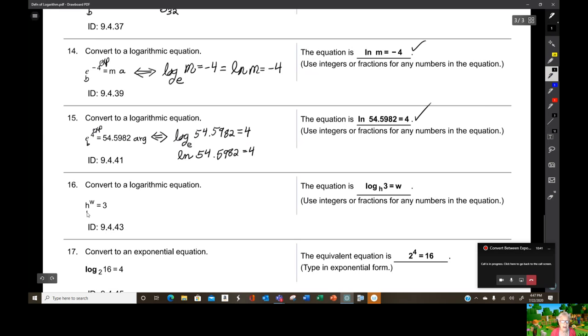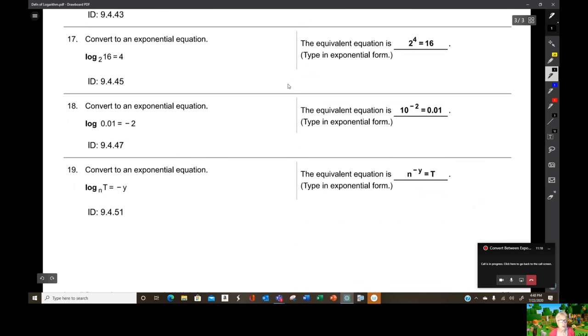Okay. And again, here we have the base, here we have the exponent, here we have the argument. So that we have log base H of 3 equals W. And indeed, that's what I see. Now that we've got this all mastered, look at this. They're changing the tables on us. Isn't that the way math is?